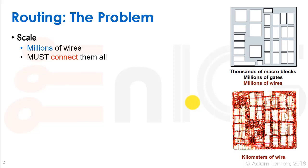The scale is huge. Here we can see that we have thousands of macro blocks, probably millions of gates inside, millions of wires. When we start connecting them we get literally kilometers of wires even though this chip may be only a few millimeters on a few millimeters, and we must connect all of these millions of wires.